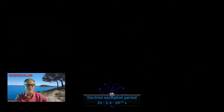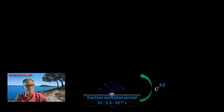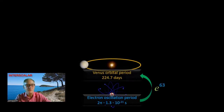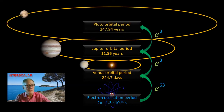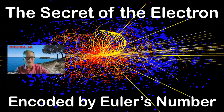In my paper Physics of Transcendental Numbers meets Gravitation, I have analyzed the orbital periods of 1430 exoplanets. Furthermore, I have shown that the orbital periods derive from the oscillation period of the electron — in other words, the orbital periods of planets are of subatomic origin. Venus's orbital period is stabilized by the 63rd power of Euler's number, Jupiter's by the 66th power, and Pluto's by the 69th power.